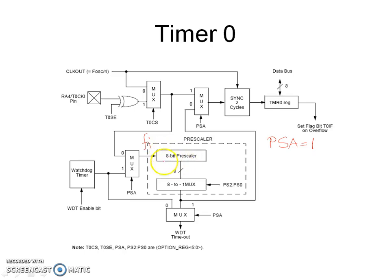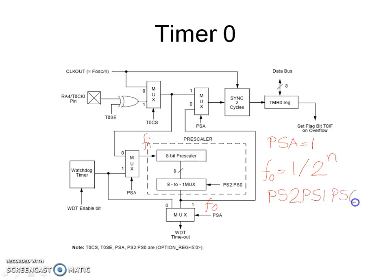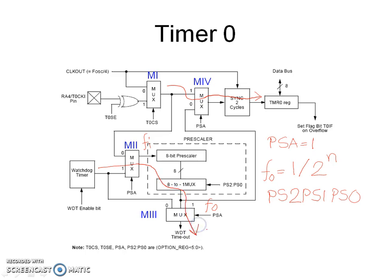For PSA equal to 1, if fi is the frequency of the signal at the input of the prescalar block and fo is the frequency at the output, then fo equals fi divided by 2 raised to n, where n is the decimal number corresponding to PS2 PS1 PS0. With PSA equal to 1, the output of M1 passes through M4, the synchronization block, and then increments the count in the TMR0 register. The output of the watchdog timer passes through M2, the prescalar block, M3, and controls the T0 bit.